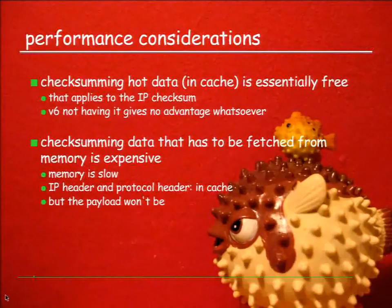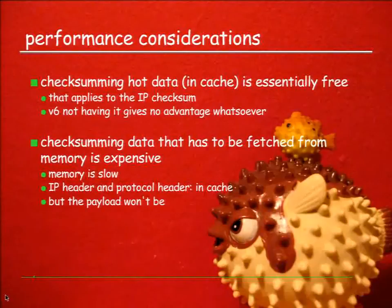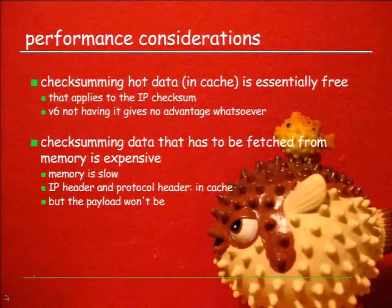In the forwarding case, when we are dealing with the IP packet and we are forwarding, the IP header is in cache - of course, we need that information for forwarding. So IP header checksum: free. IPv6 not having that checksum, which they often point out as a performance improvement, doesn't make a difference - you can't even measure it. The few cycles we spend in v4 to calculate the checksum, in v6 we spend waiting for memory. Checksumming data we have to fetch from memory is very expensive. In the forwarding case, we usually don't touch the payload, so fetching that data just to checksum it is expensive.